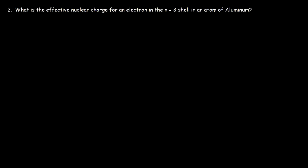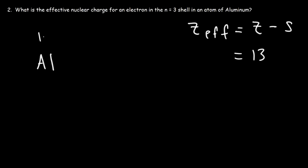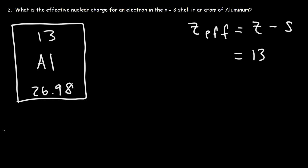Let's move on to our second example: what is the effective nuclear charge for an electron in the n equal 3 shell in an atom of aluminum? The formula for effective nuclear charge is the atomic number minus the number of inner shell electrons. The atomic number of aluminum is 13. On the periodic table you'll see 13 above aluminum and 26.98 below it — 26.98 is the mass number, and 13 is the atomic number, the smaller whole number.